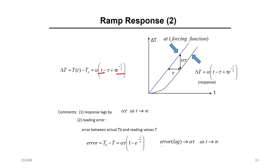The blue line is your input — the ramp forcing function — and the other line is the output. There will always be an error between the input and output, and we call this the steady state error. The steady state error when t goes to infinity will be alpha times tau — it's a constant. So we will always have an error between input and output. To reduce this error, we use a controller, which we'll discuss in chapter 10.